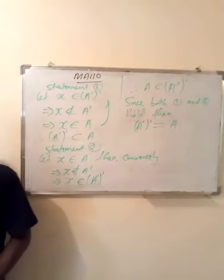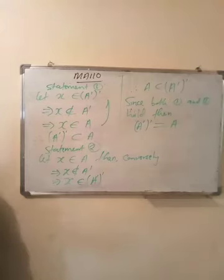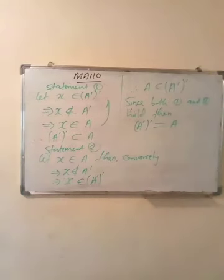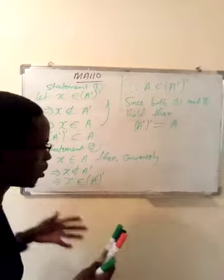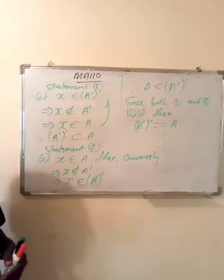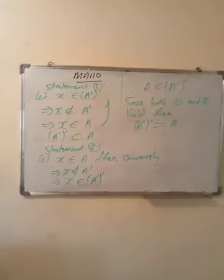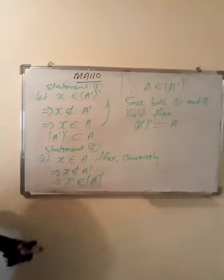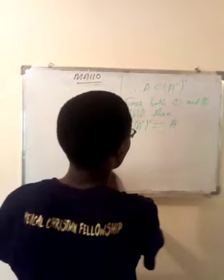This may seem confusing at first, but always try to go through it and understand the basics and you'll find it becomes quite easy. Now let's look at what is called the commutative law. In mathematics, you've looked at commutative law in algebra in your lower grades — in secondary school, high school, or primary school. So number two, we look at the commutative law.